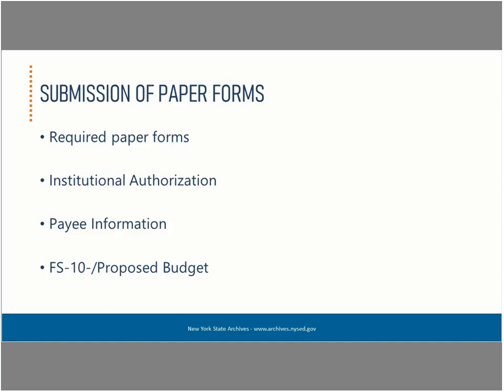Mail the forms directly to the Grants Administration Unit of the New York State Archives. Our address can be found in the eGrants system as well as in the current application guidelines. Please also note that these are the only forms that need to be mailed to us — all other forms are submitted electronically. There is no need to mail a copy of your project narrative or any attachments, as reviewers will only have electronic access to your application.